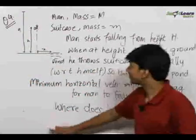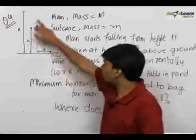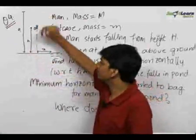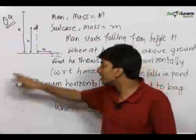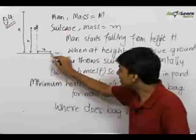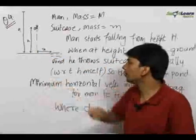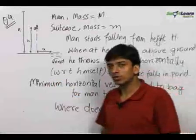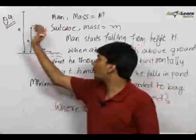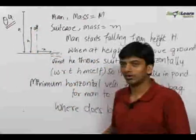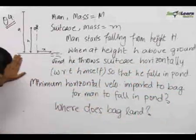This is a very conceptual question. Here is a man with a bag in his hand who starts falling from a height H. When he reaches a height h from the ground, he realizes that the ground below is very hard. He sees a pond nearby at a distance x from his line of fall, so he decides to throw away his suitcase in the opposite direction so that he falls in the pond. He is a very intelligent person and knows a little bit of physics, due to which he knows he can do it.